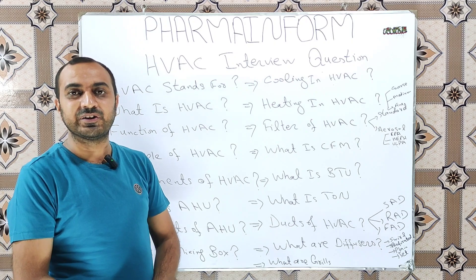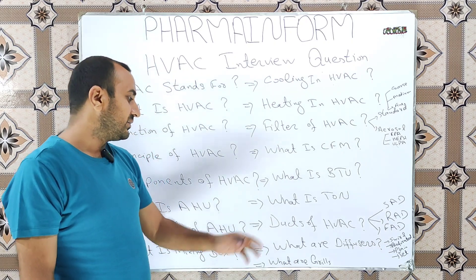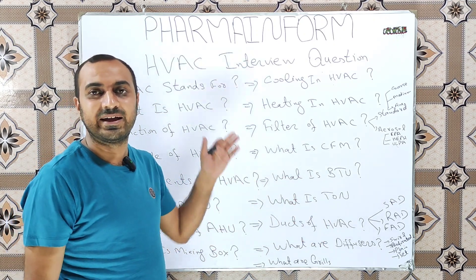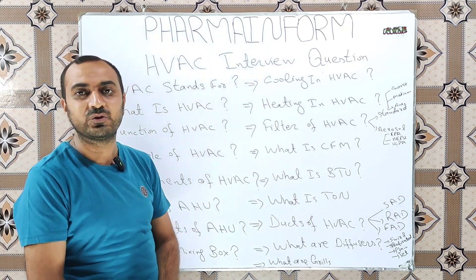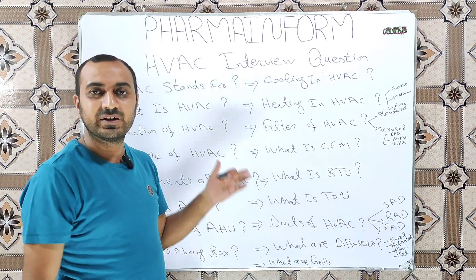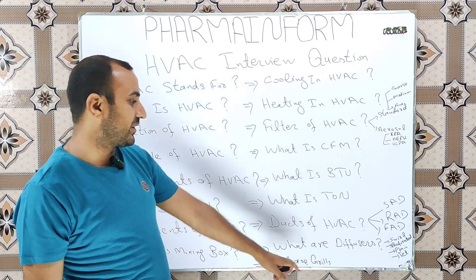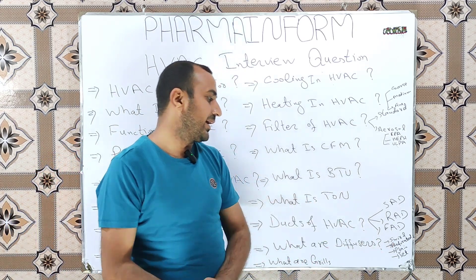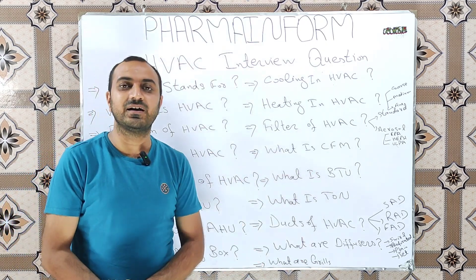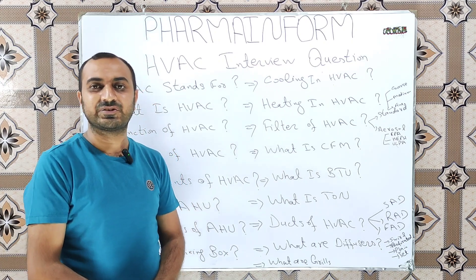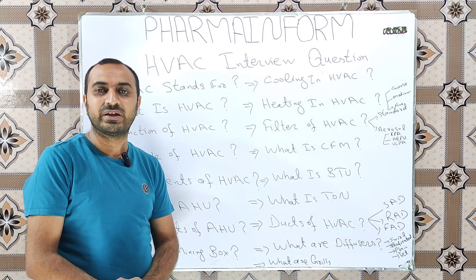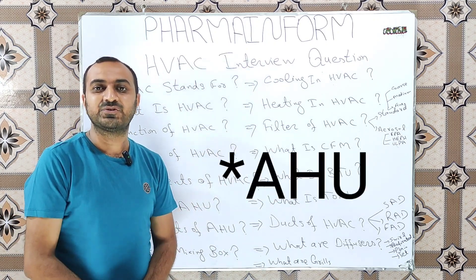The next question is: what are diffusers? Diffusers are installed at the end of the supply duct and are used to supply conditioned air into the area or room. There are different types of diffusers: swirl type, perforated type, plain diffusers, and jet diffusers. The next question is: what are grills? Grills are installed at the face of return ducts, and through these grills the air from the area or room is returned back to the HVAC.